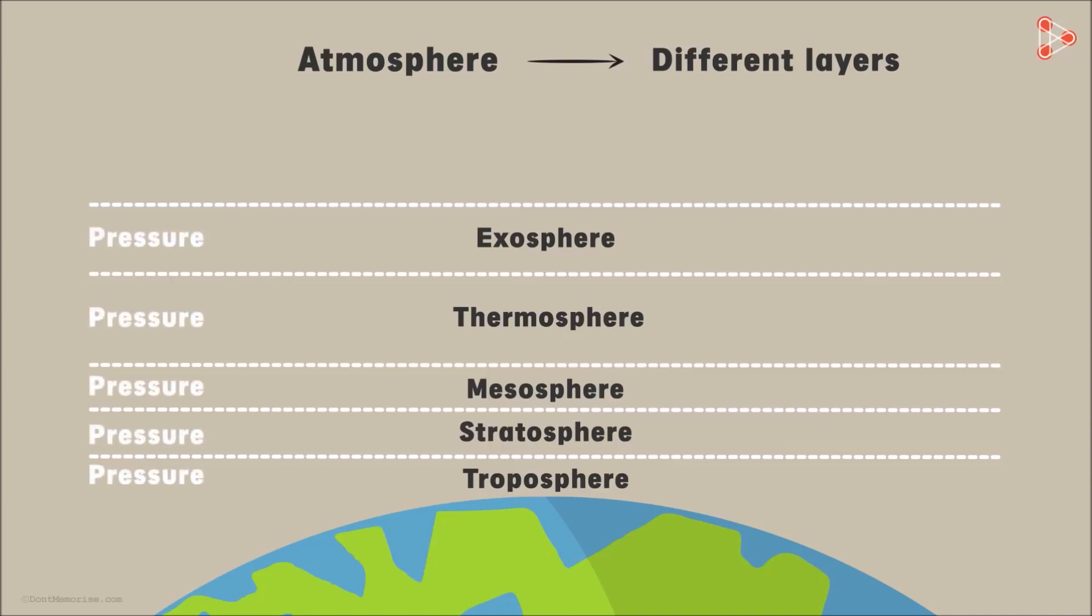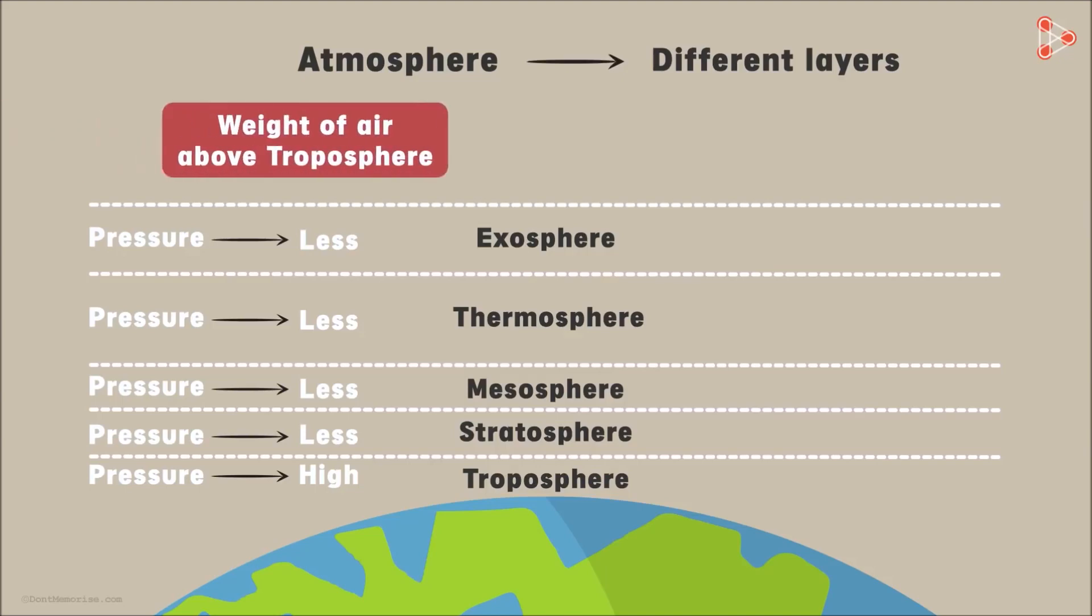The pressure in the troposphere, which is the bottom most layer, is higher than the pressure in the layers above it. And I am sure you can guess the reason why. This is because the weight of the air above the troposphere is greater than the weight of the air above, say the stratosphere.